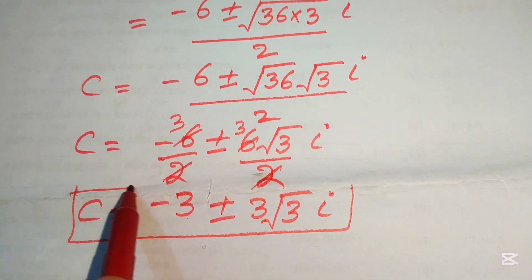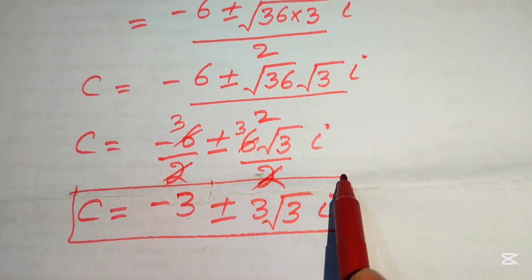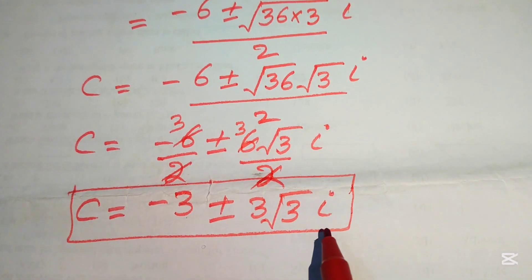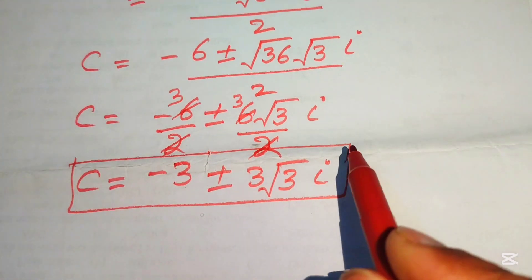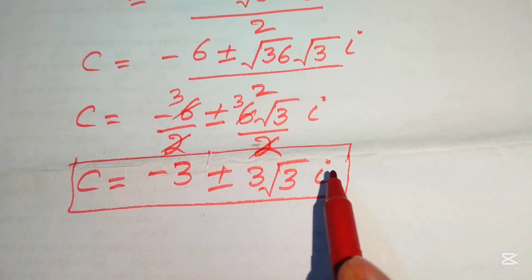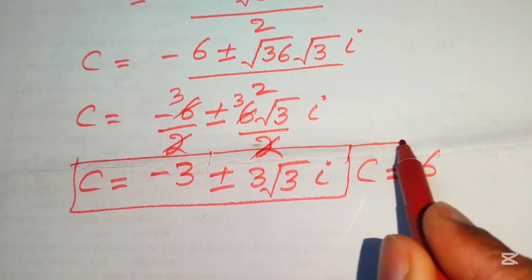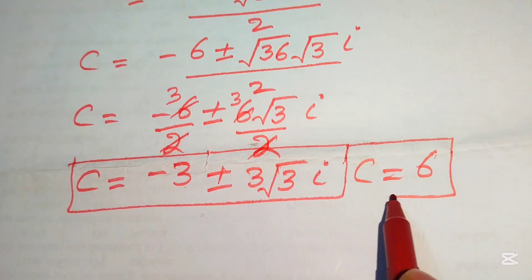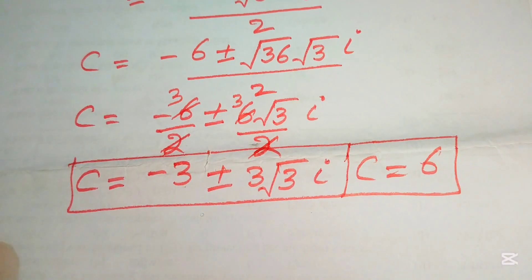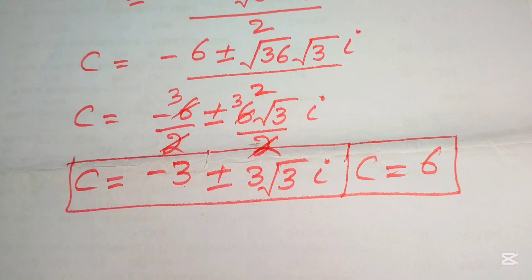These are the two complex roots of the given equation. The given equation has one real root: C equals 6. This is the final answer. Thank you so much for watching this video — please subscribe to my channel for more exciting videos.